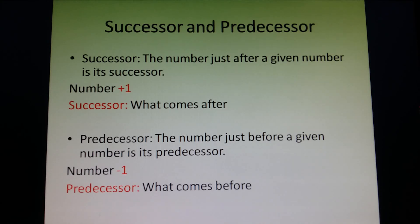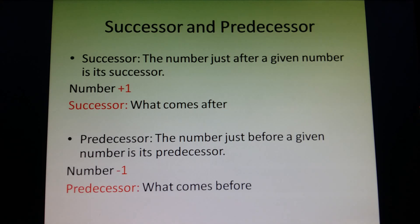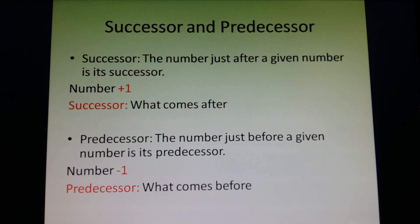Predecessor is what comes before. If we subtract 1 from any number, we get its predecessor. So successor is what comes after and predecessor is what comes before. In successor, we add 1 to a number, and in predecessor, we subtract 1 from a number.